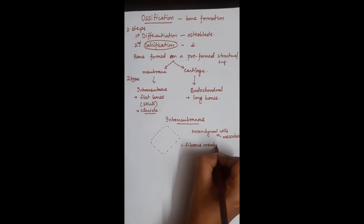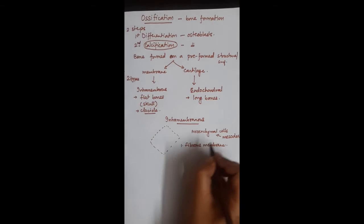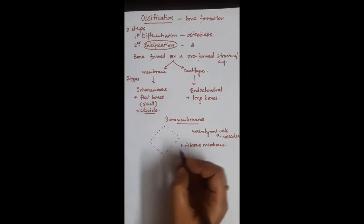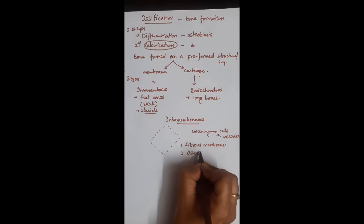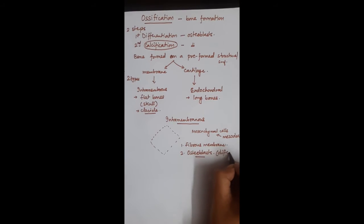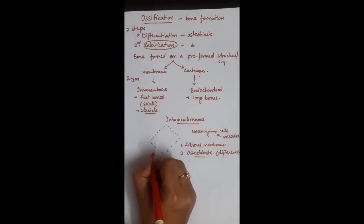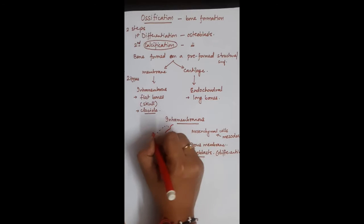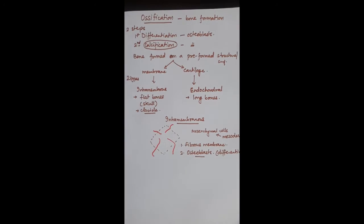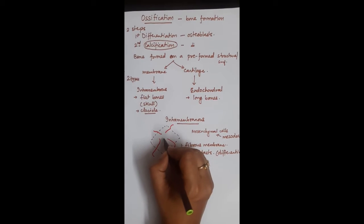So formation of fibrous membrane is the first step. Now these mesenchymal cells gradually start converting into osteoblasts, so they are differentiating into osteoblasts when the blood vessels in the vicinity start developing. As we know, bone tissue develops when there is good blood supply and oxygen supply. So in the center of this membrane...